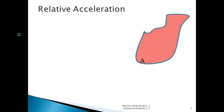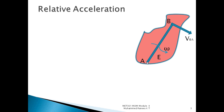This is the Relative Acceleration method. In the Relative Acceleration method, we have a rigid link with points a and b. The velocity of b with respect to a is at 90 degrees. The acceleration of b with respect to a equals the acceleration of b minus the acceleration of a.